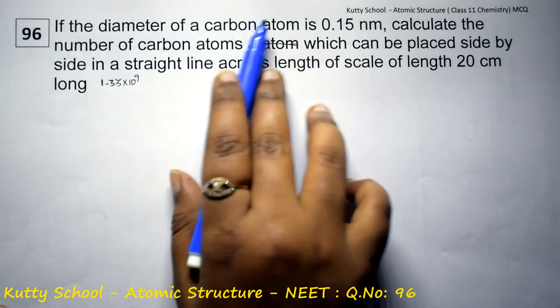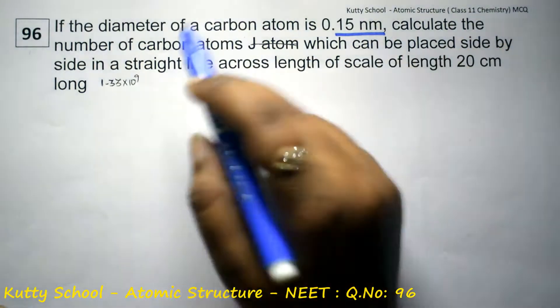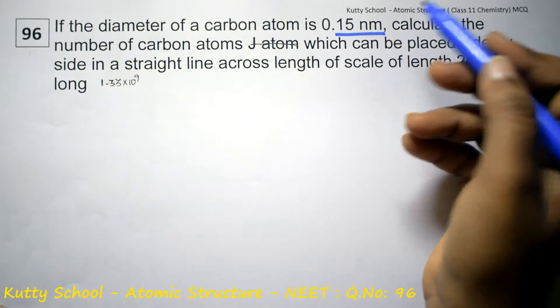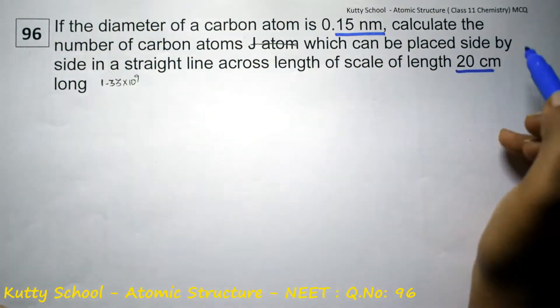If the diameter of a carbon atom is 0.15 nanometer, calculate the number of carbon atoms which can be placed side by side in a straight line across the length of the scale of 20 centimeter.